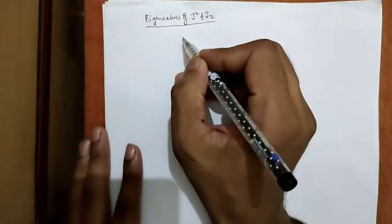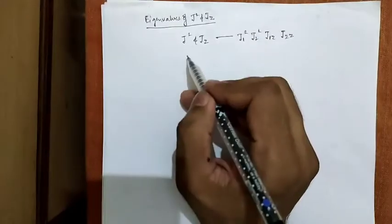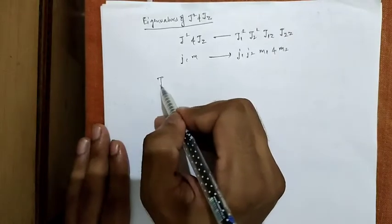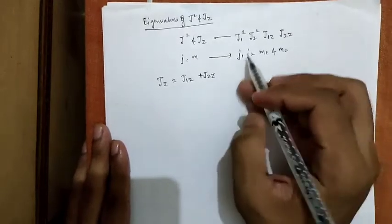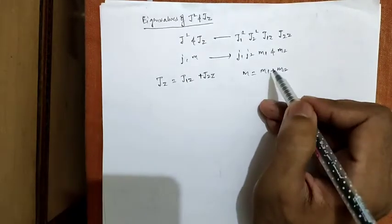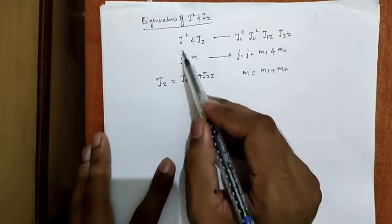To find the eigenvalues of J-squared and Jz in terms of j1-squared, j2-squared, j1z and j2z — which means to obtain the |jm⟩ states in terms of j1, j2, m1 and m2 — we know that Jz can be written as j1z plus j2z, and the value of m equals m1 plus m2.